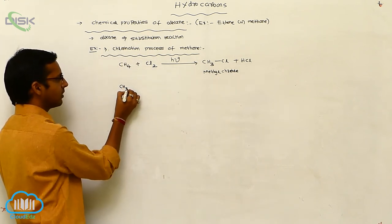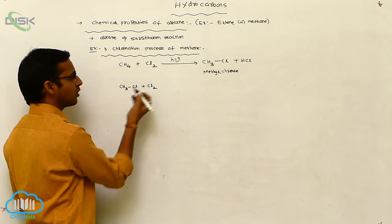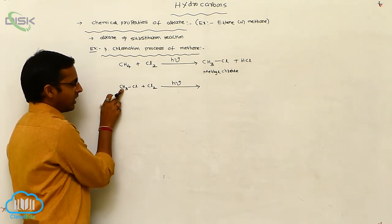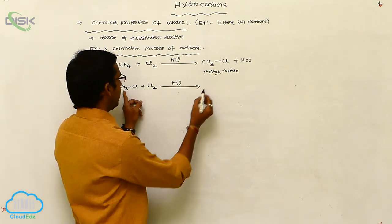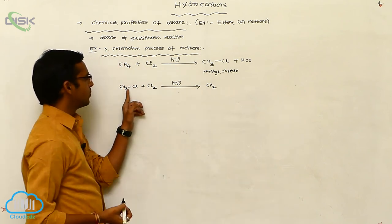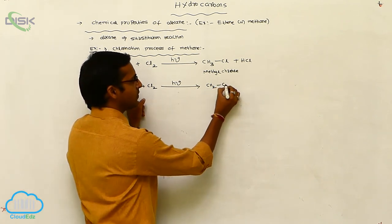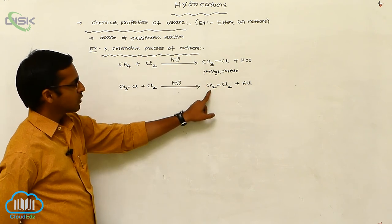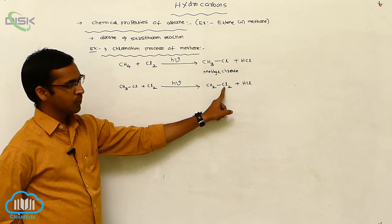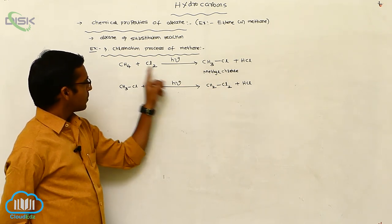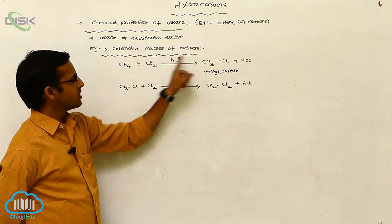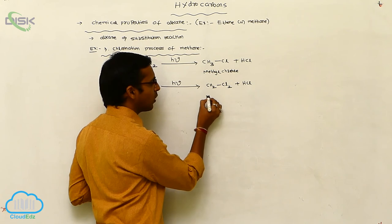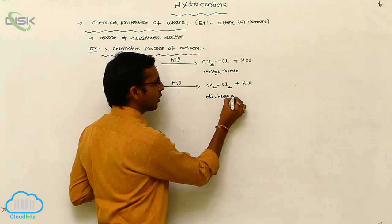Methyl chloride (CH3Cl) reacts again with chlorine (Cl2) in the presence of photochemical conditions. Now there are 3 hydrogens; one hydrogen is replaced with chlorine, giving CH2Cl2 plus HCl. Already 1 chlorine was present; adding another gives 2 chlorines. This product, with 2 chlorines, is called dichloromethane.